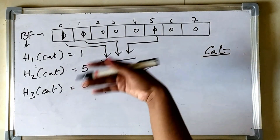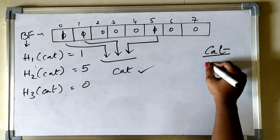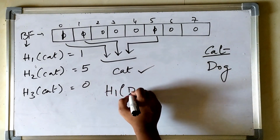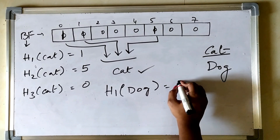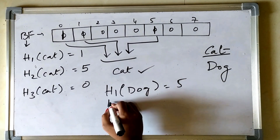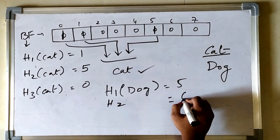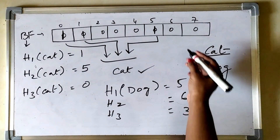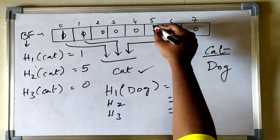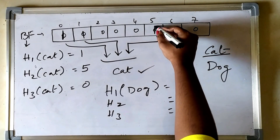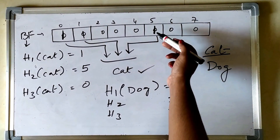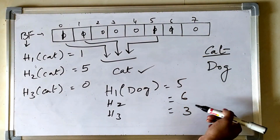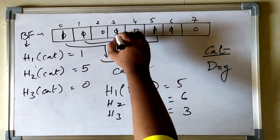Now say we have to add another element, 'dog'. We calculate its hashes: H1(dog) = 5, H2(dog) = 6, H3(dog) = 3. We toggle the bits at indexes 5, 6, and 3. Index 5 is already 1 so we do not change it. We set index 6 to 1 and index 3 to 1.